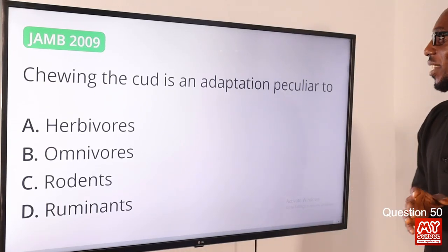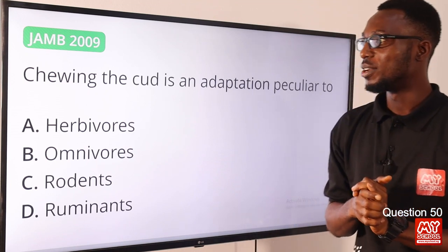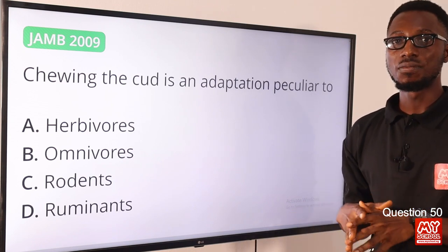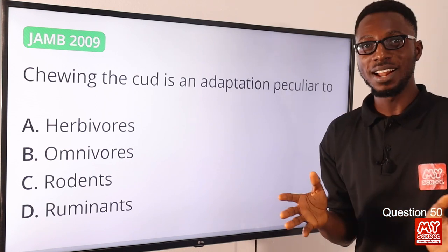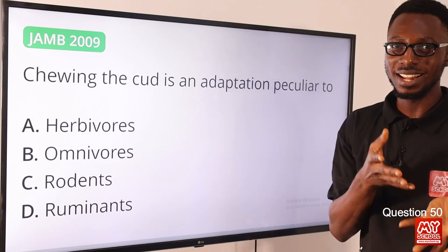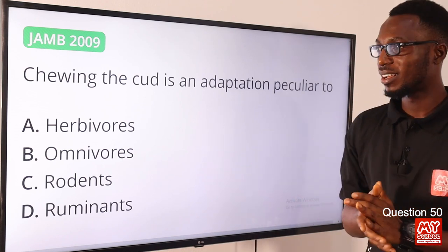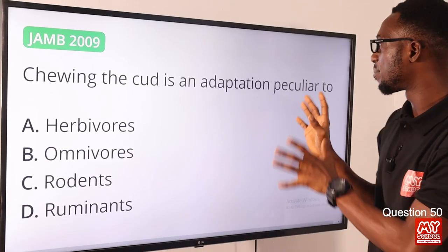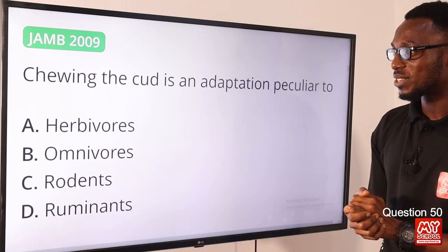Question 50: Chewing the cud is an adaptation peculiar to ruminants. Chewing the cud produces saliva, which strikes a balance for the acidity of the digestive system so that rumen bacteria can carry out their work effectively. Ruminants have more than one compartment in their stomach; they bring out the grass they swallowed earlier and chew it again to enhance digestion. Ruminants include sheep, cows, and similar animals. The correct option is option D for ruminants.